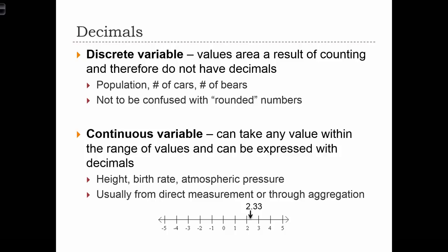On the other hand, we have continuous variables. Continuous variables can take any value within the range of values. Here the range in our example below goes from minus 5 to 5. And our measurement tool can calculate or measure any value in that range, including partial values. So any number can be expressed using decimal places.